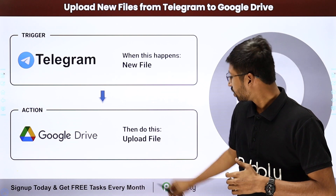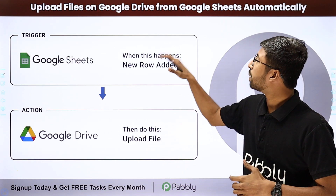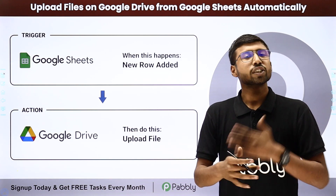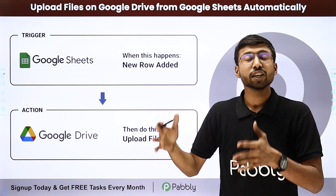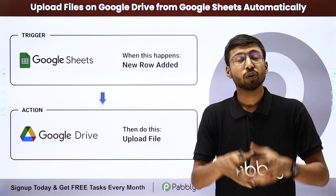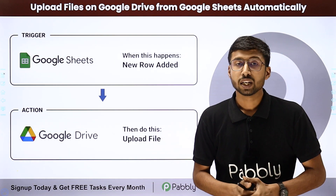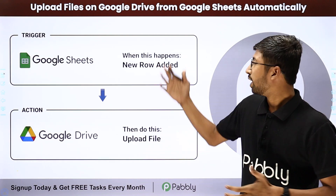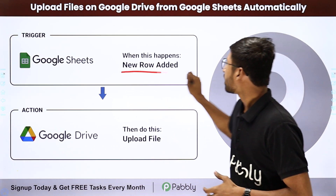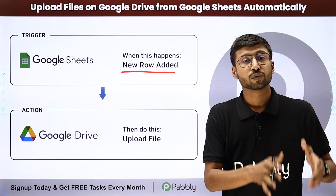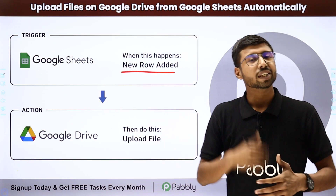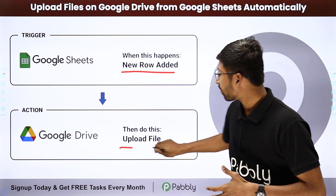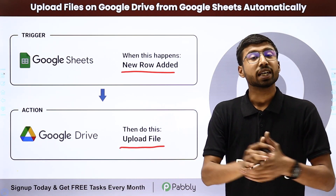The fourth automation use case is how to upload files to Google Drive from Google Sheets automatically. Using this automation, suppose you are collecting file URLs from various sources and adding them as rows in a Google Sheet. You just add a new row with the file links you want to upload, and automatically those same files will be uploaded to your Google Drive account using Pabbly Connect.